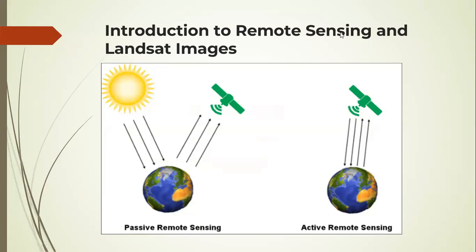Here you can see this is passive remote sensing. As you can see, the source of electromagnetic radiation is the sun. As it reaches the earth, it is either absorbed, reflected, or transmitted. The sensor on the satellite will record whatever is reflected.